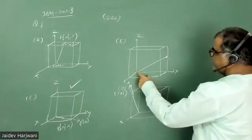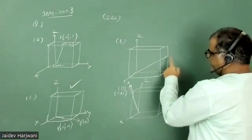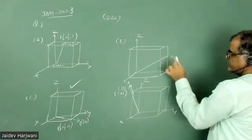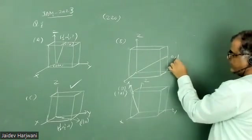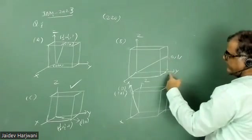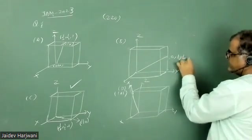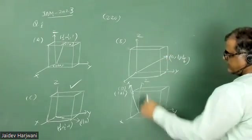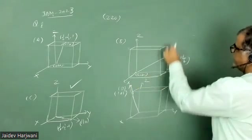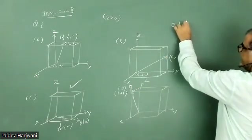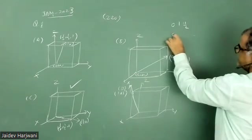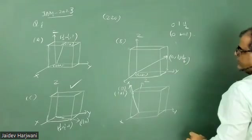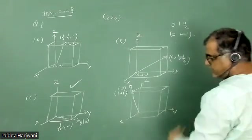Similarly, if I find this direction and write the coordinate of this one—if I assume this one is half—this will be zero. So it's [0,1,1/2]: x is zero, y is one, z is half. If I find the direction from origin, this will be [0,1,1/2], and if you remove the fraction, [0,2,1]. This is [0,2,1] direction, so this is also not the right option.